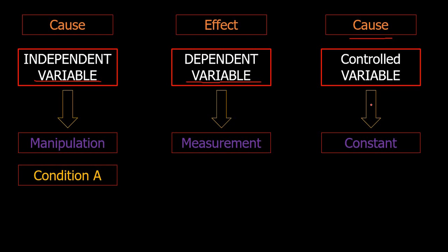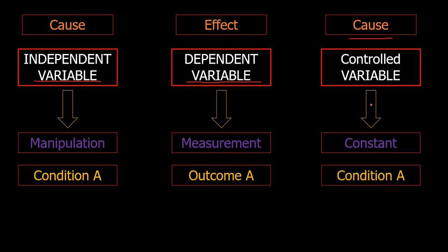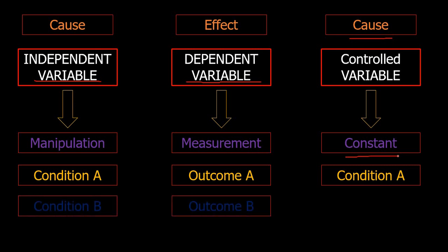For example, condition A will produce outcome A, and the controlled variable will also have an effect on outcome A — although it will be constant for all experimental setups. Similarly, condition B will produce outcome B, and the controlled variable will have an effect on the dependent variable, but again, it remains constant for all experimental setups.